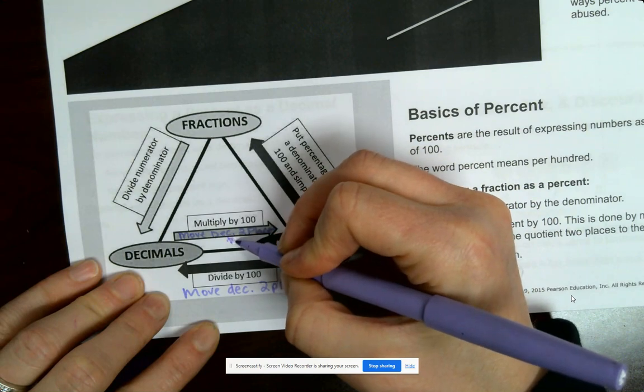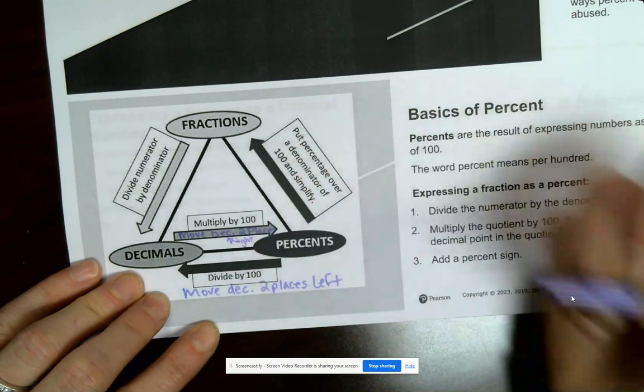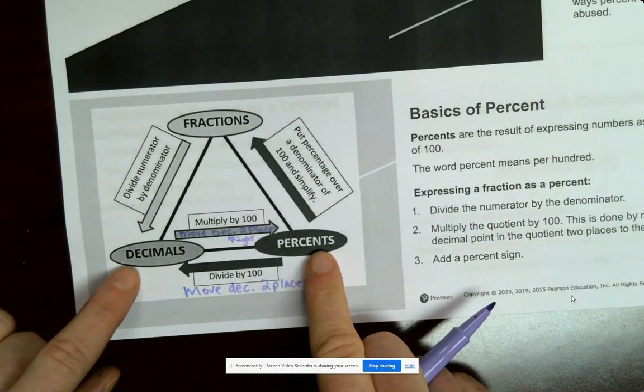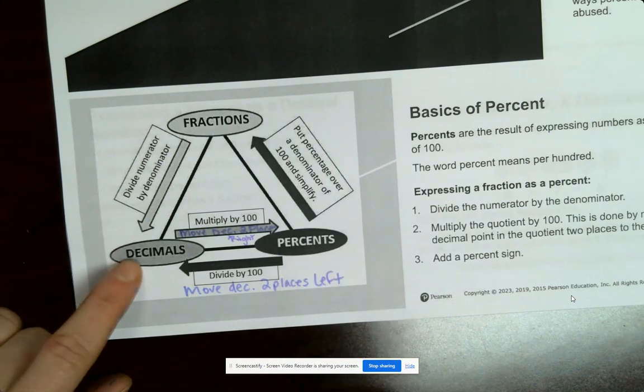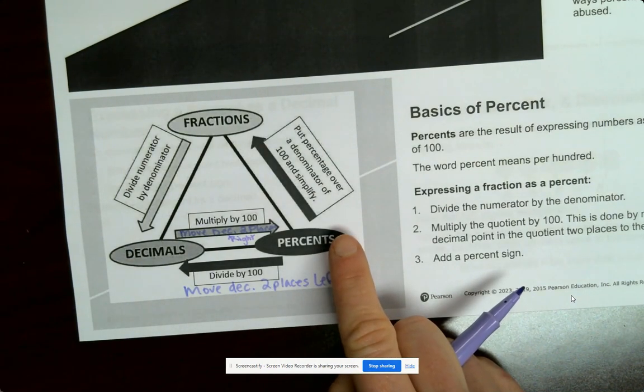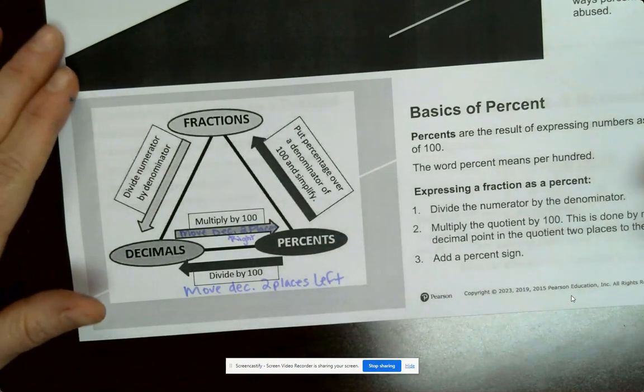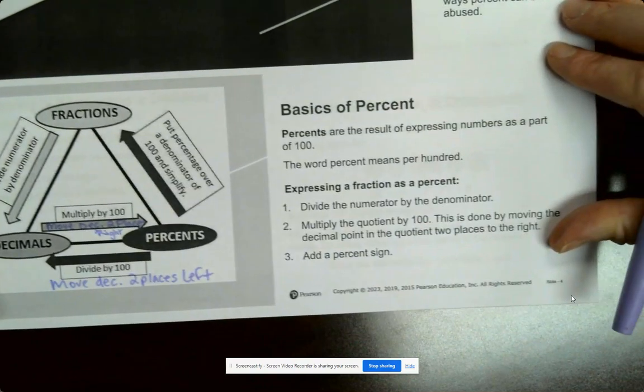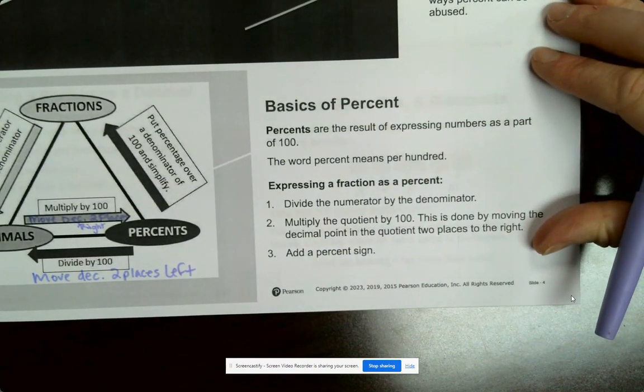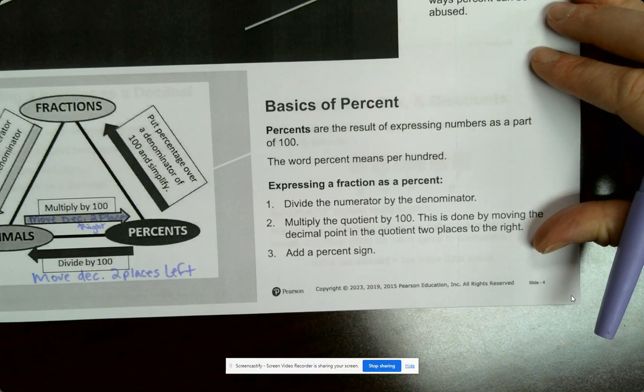So this is right. So percent to decimal, move it two places to the left. Decimal to percent, move two places to the right. Percents are out of 100. The word percent means per 100.